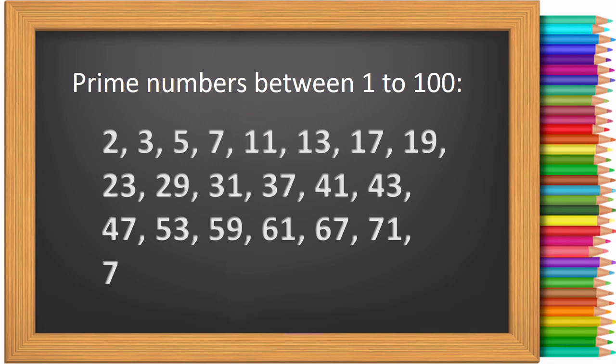71, 73, 79, 83, 89, and 97 are the 25 prime numbers between 1 to 100.